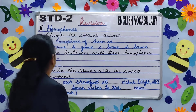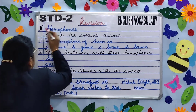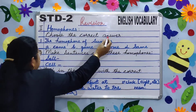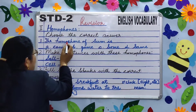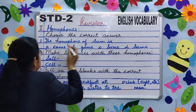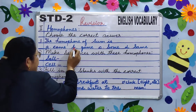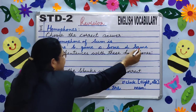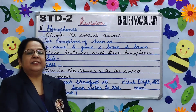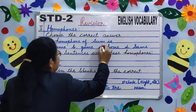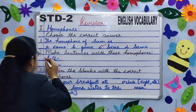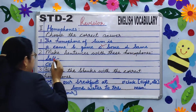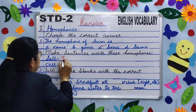Number two — homophones, choose the correct answer. The homophone of 'some' is: A. Game, B. Same, C. Sum. Which is the right answer? Very good — C. Sum.